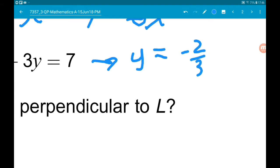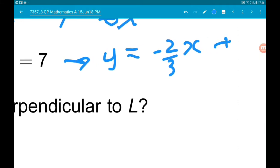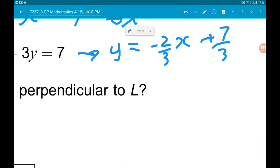So minus 2 thirds x, add 7 over 3, but we don't really care about that bit. What is important is m is minus 2 thirds.